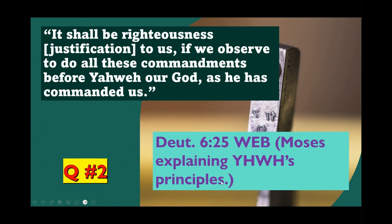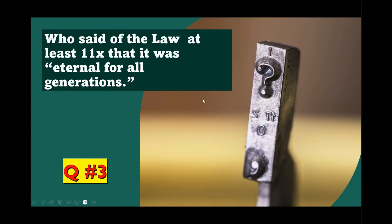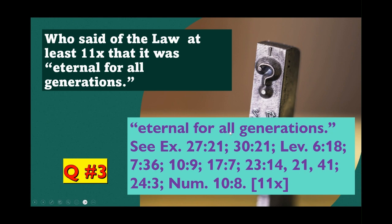I hope you got that correct. Now question three: Who said this? Who said of the law — at least 11 times — that it was 'eternal for all generations,' referring to the law given to Moses? Is that Jesus, Paul, or Yahweh? Make a note of your answer. The answer is Yahweh — the phrase 'eternal for all generations' appears in at least 11 passages, and careful research on all synonyms shows at least 19 passages. I hope you got that correct.